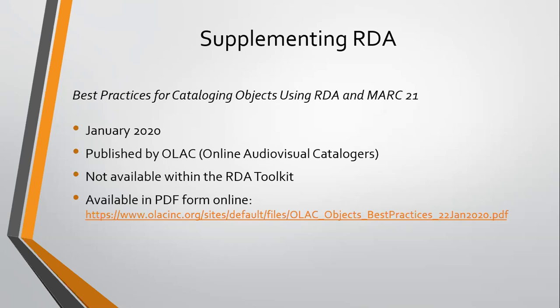Libraries do have many non-print resources, realia, and other objects that we need to describe. It would be impossible for RDA to include specific, practical, and complete cataloging rules for every single type of resource, so general guidelines is what we get. That was really the whole plan for RDA. In Maxwell's Handbook for RDA, he points to the archive site for the joint steering committee about discussions on all the different specialist cataloging manuals that can supplement RDA.